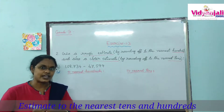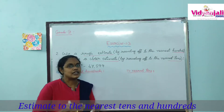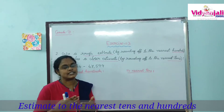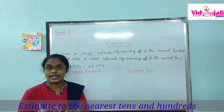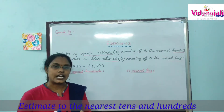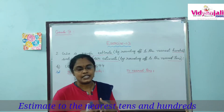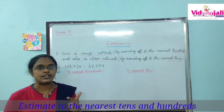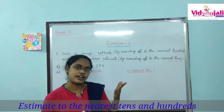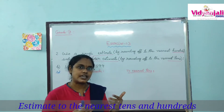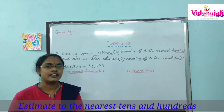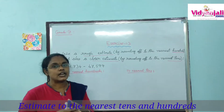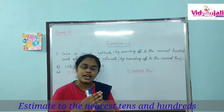We know the rounding numbers in tens: 10, 20, 30, 40, 50, 60, 70, 80, 90, 100. And the rounding numbers in hundreds are: 100, 200, 300, 400, 500, 600, 700, 800, 900, and 1000. These are the rounding numbers in hundreds place.